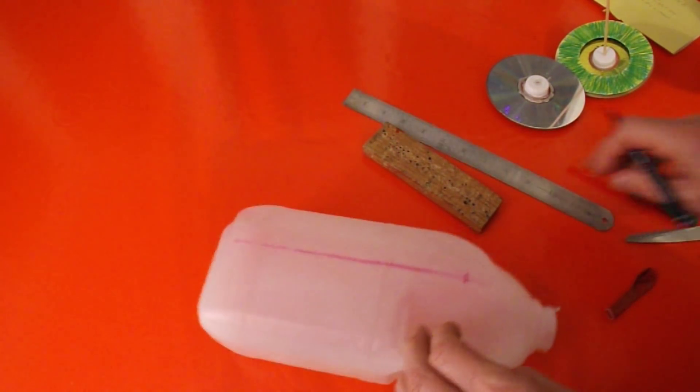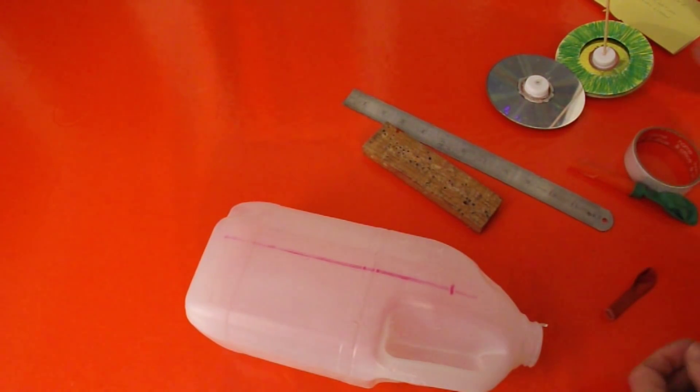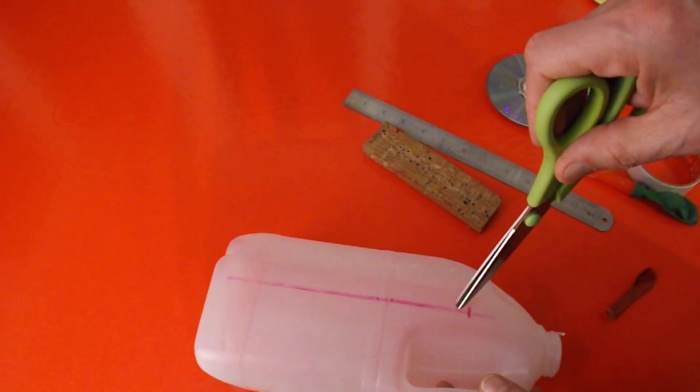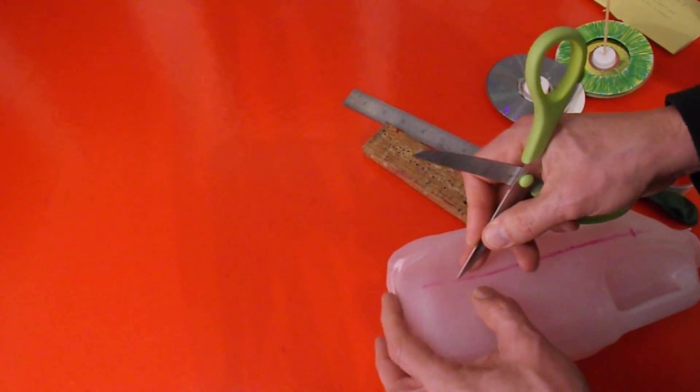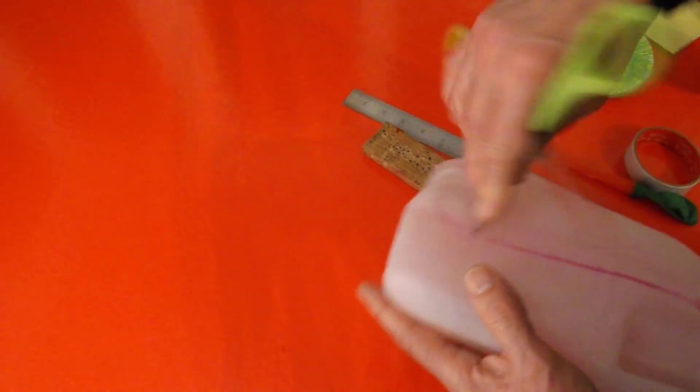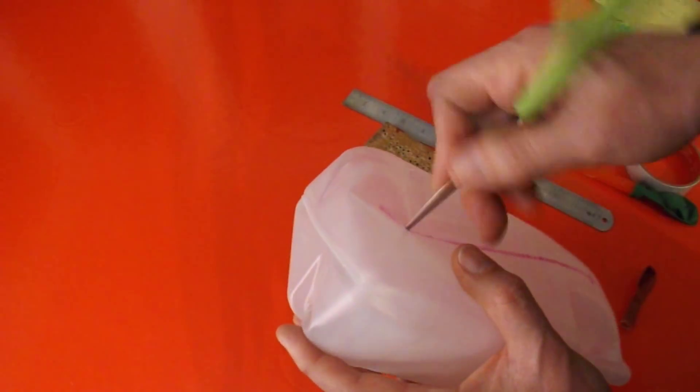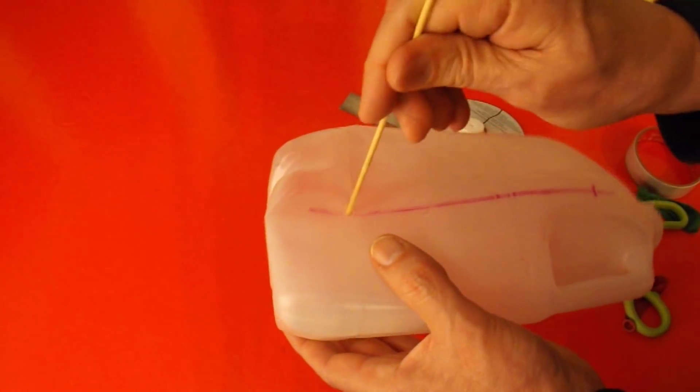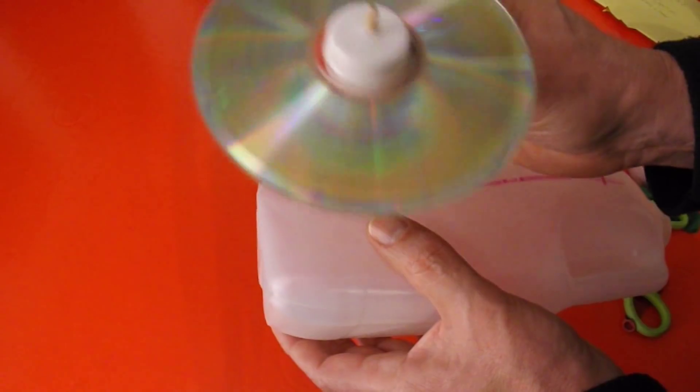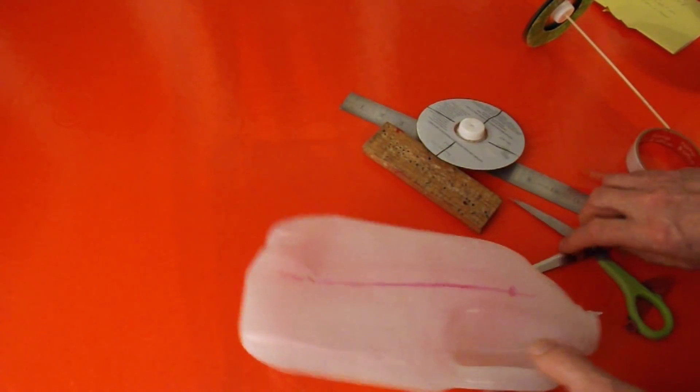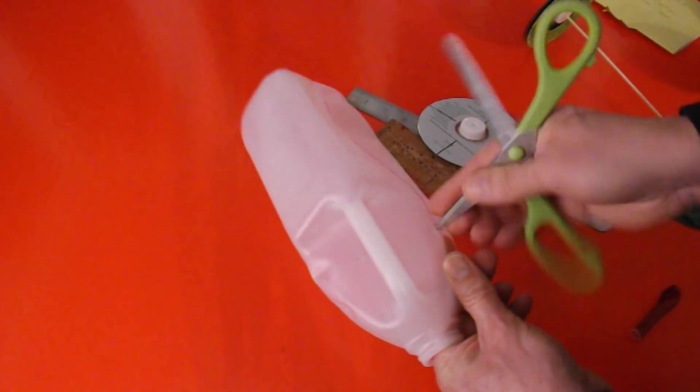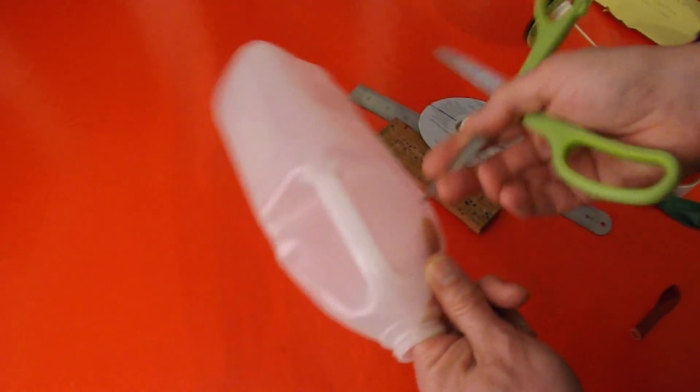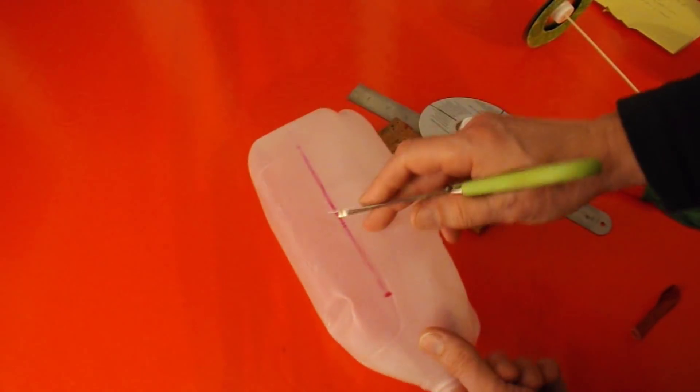Now ideally you'd make the holes with some sort of sharp thing like a nail. I'm going to use this. You want to make sure it's plenty big enough for your axle to go through. It mustn't be tight, it's got to be nice and loose. Because this plastic's so soft, the whole thing's bending as I'm doing this.